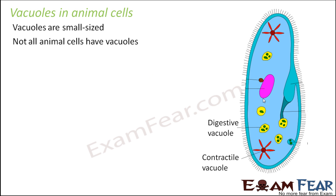Look at Paramecium, which is an animal cell where you can see vacuoles. There is a digestive vacuole and also a contractile vacuole. Each of these vacuoles has a different purpose - the digestive vacuole helps in digestion of food, whereas the contractile vacuole helps in excretion of waste materials from the body.